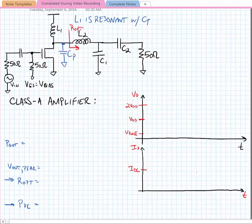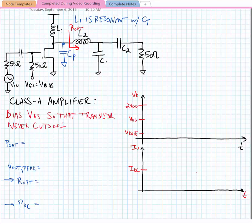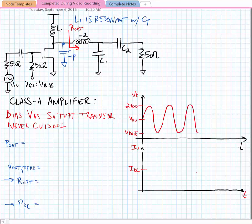With a Class-A amplifier, we bias the gate so that the transistor never cuts off. If we look at this in terms of the voltage swing at the drain of the transistor, we bias it so that the voltage always swings through its full range of operation, between 2VDD and V-knee. This means, of course, that current will always continuously flow in the transistor.